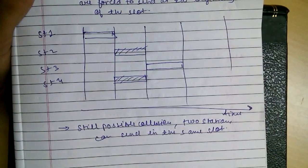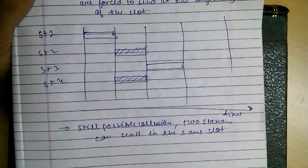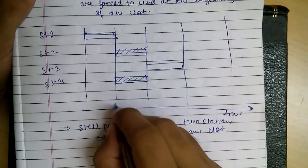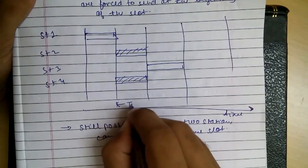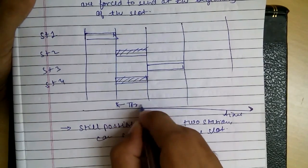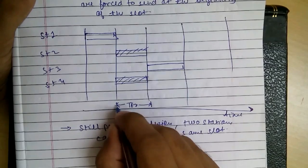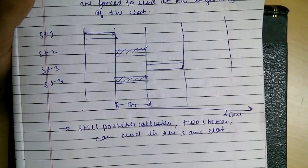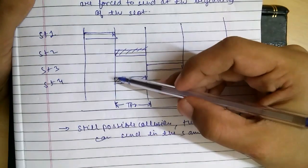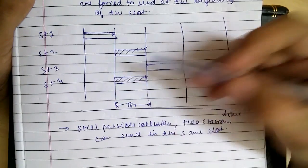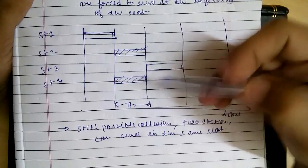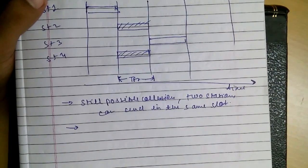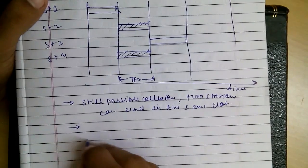But the vulnerable time is significantly reduced as compared to pure ALOHA, as it is TFR, which was 2 times TFR in pure ALOHA. As we are forced to send at the beginning only, the vulnerable time is reduced by half of what it was in pure ALOHA.